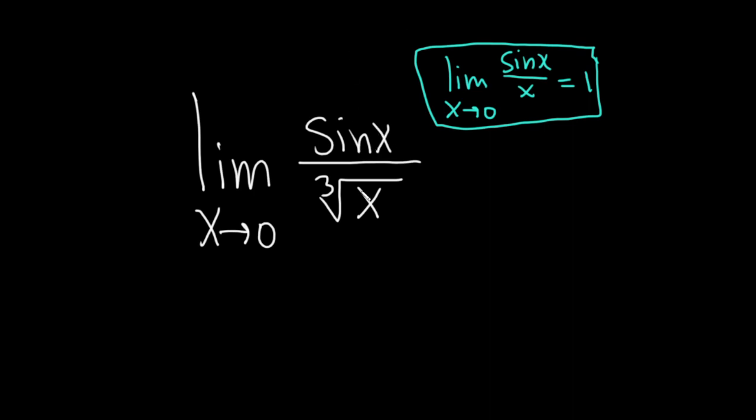So here there's an x and here there is a cube root of x. It would be really nice if we had an x here. So what we can do is we can make it become an x. And to do that, basically, we need to make it an x.